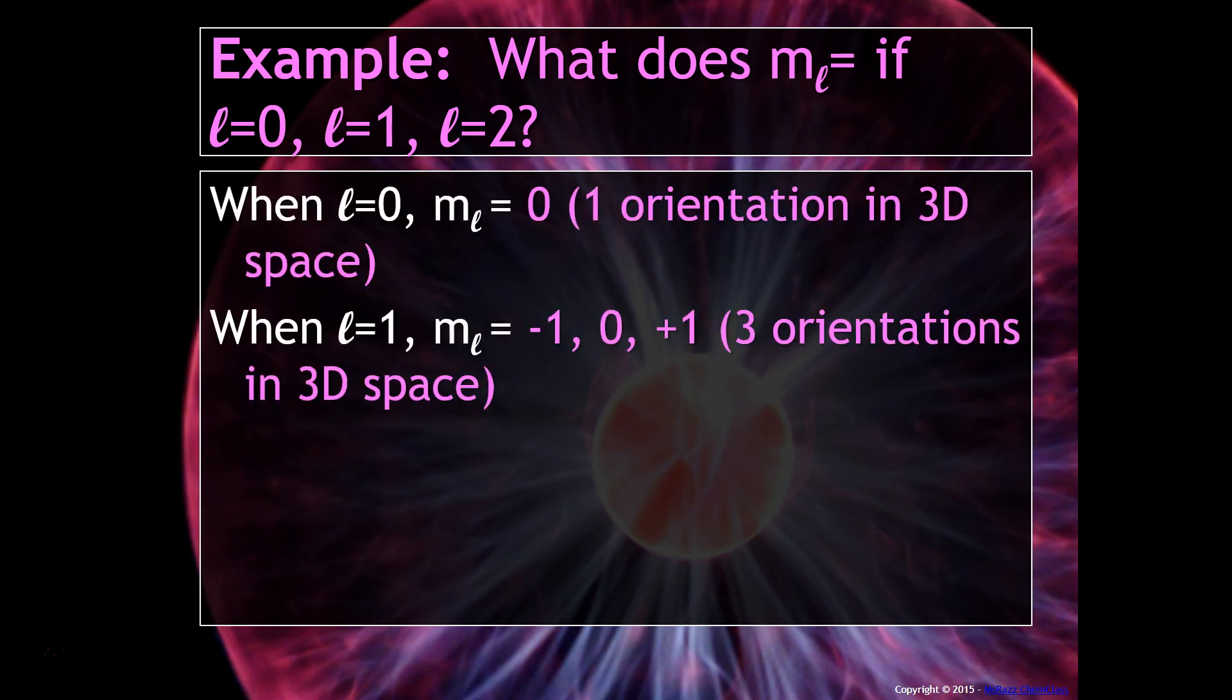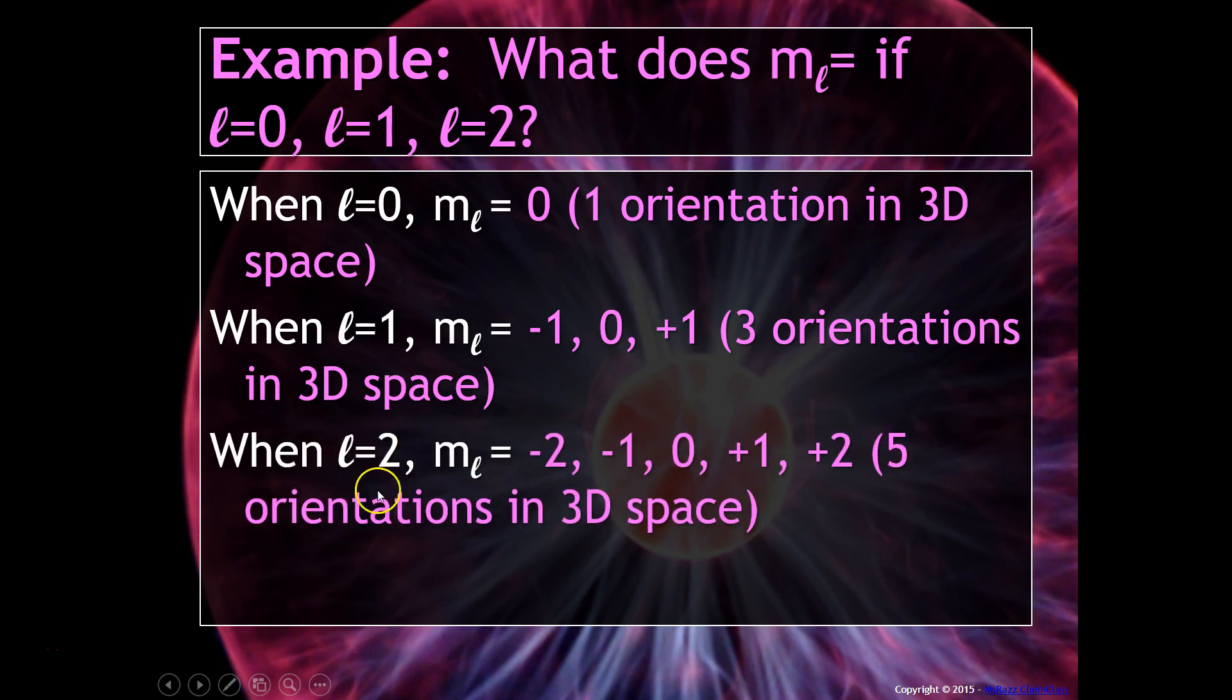When L equals 1, M sub L can be minus 1, 0, or plus 1. And that makes sense because there are three different orientations in three-dimensional space, because here we're talking about a P sublevel. When L equals 2, we're talking about a D sublevel. So that means M sub L could be minus 2, minus 1, 0, plus 1, or plus 2, because there are five orientations in three-dimensional space for a D sublevel.